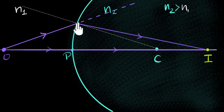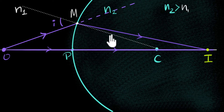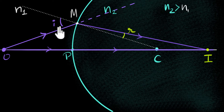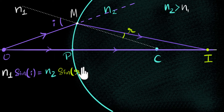We'll apply Snell's law to the point where the oblique ray hits the surface — let's call that point M. This is the incident ray, this is the normal, so this is the angle of incidence i. This is the refracted ray and this is the normal, so this is the angle of refraction r. Snell's law tells us: n1 sin(i) = n2 sin(r).